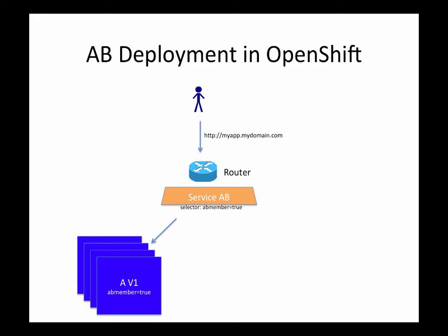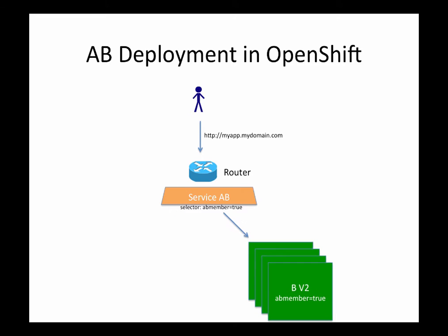With this architecture in place, when you need to introduce a change in the A/B deployment model, all you do is add your version 2 application — the B version — and assign it the same exact label. Your service will pick up the new pods based on the same selector, and traffic gets routed between version 1 and version 2. Eventually you can keep version 2 and remove version 1 if you're happy with it.